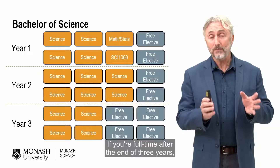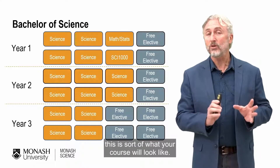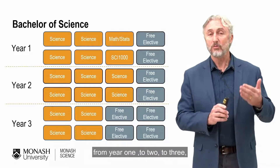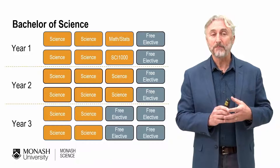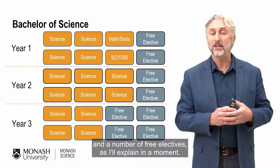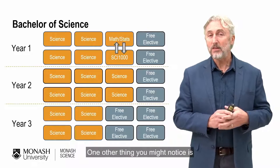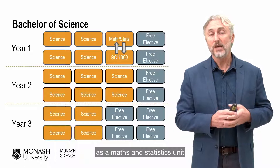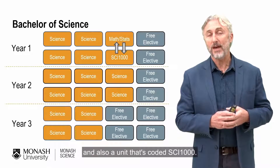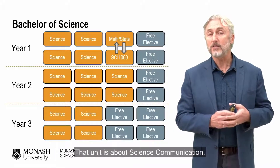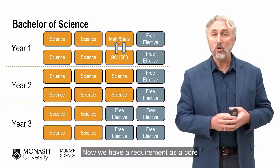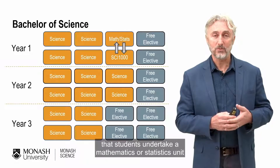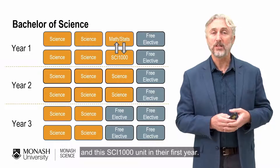If you're full time, after three years, your course will include a range of science units from year one through to three, and a number of free electives. You might notice I've named a maths and statistics unit and a unit coded PSI 1000, which is about science communication. We have a core requirement that students undertake a mathematics or statistics unit and this PSI 1000 unit in their first year.